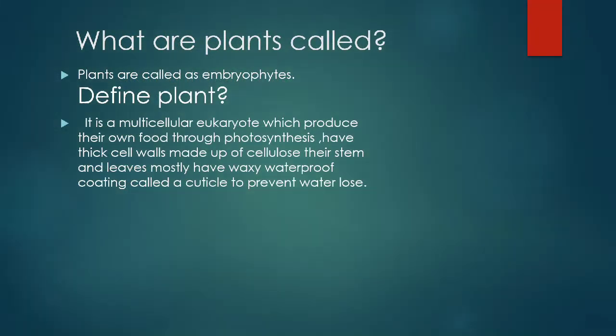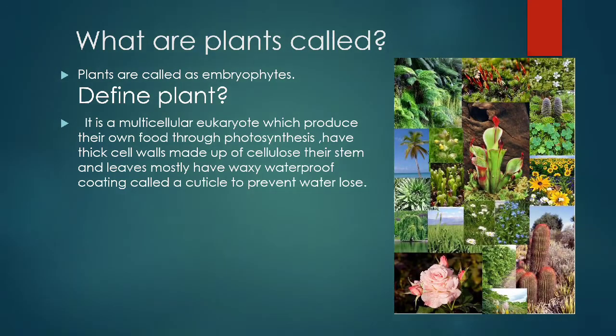What are plants called? Plants are called embryophytes. They are multicellular eukaryotes which produce their own food through photosynthesis, have thick cell walls made up of cellulose, and their stems and leaves mostly have a waxy waterproof coating called a cuticle to prevent water loss.